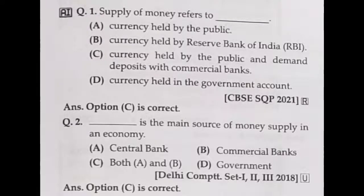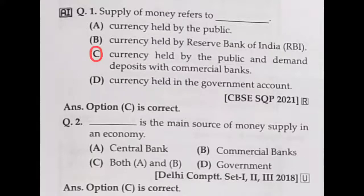Let us solve MCQ questions on economic subjects, as the term-end examination is likely to be held soon. Question number one: supply of money refers to — the options are currency held by public, currency held by the Reserve Bank of India, currency held by the public and demand deposits with the commercial bank. Normally, currency held by the public and demand deposits with the commercial bank is the supply of money. So option C is the correct answer.